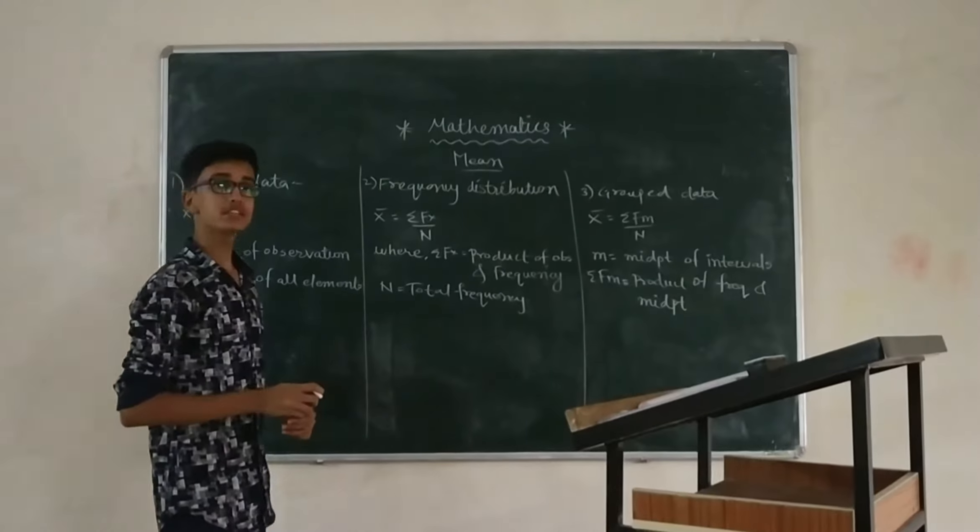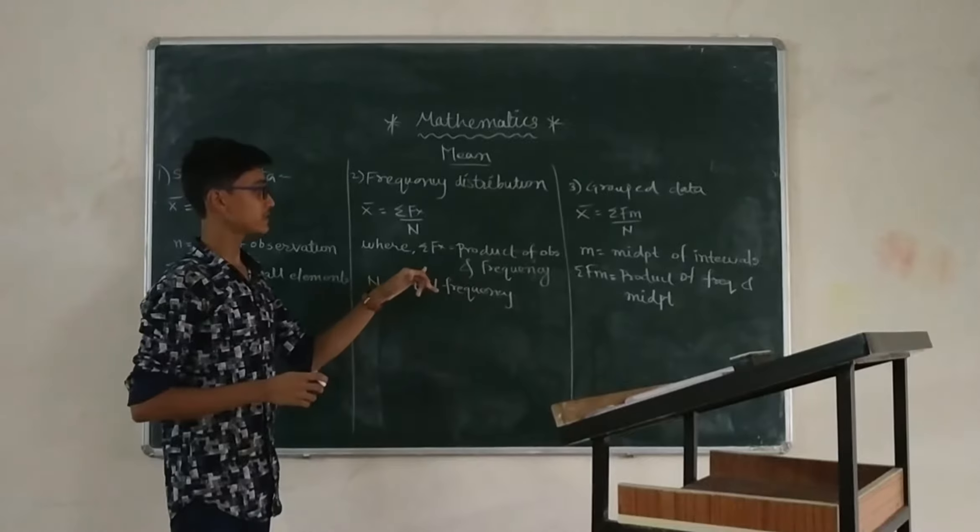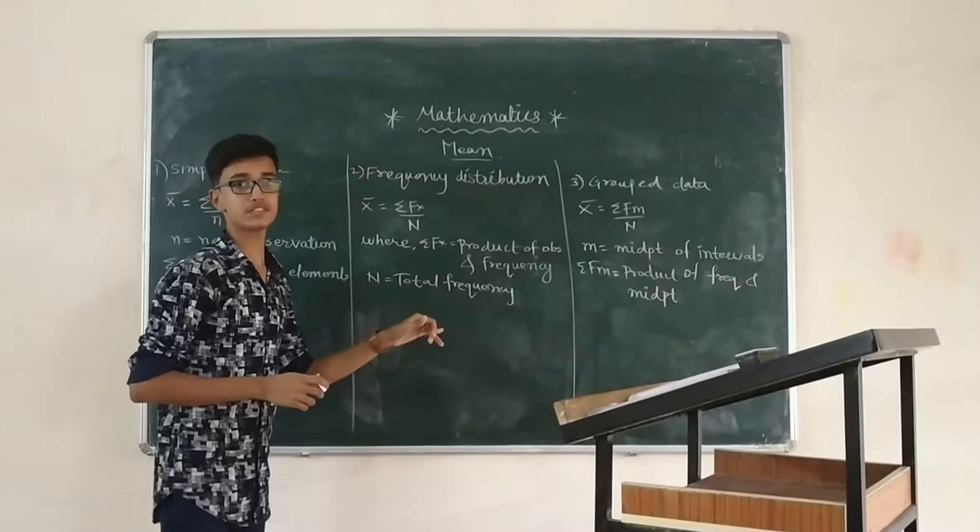So this formula is mean x bar is equal to summation fx upon capital N, where summation fx is equal to the product of the values and the frequency, and capital N is equal to total frequency.